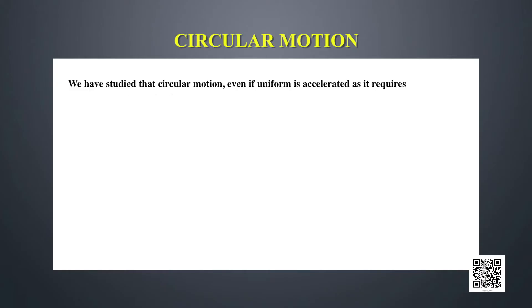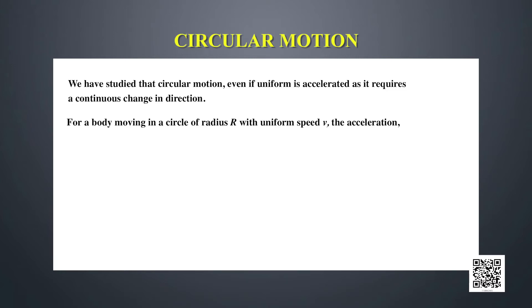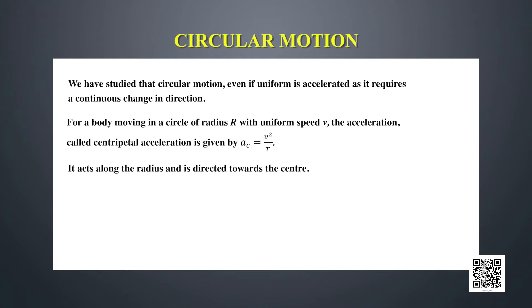Let us now take some examples of circular motion. Circular motion, even if uniform, is an accelerated motion because it requires a continuous change in direction. For a body moving in a circular path of radius r with a uniform speed v, the centripetal acceleration is given by v² / r. According to the second law, the required centripetal force F_c is given by F_c = mv² / r.